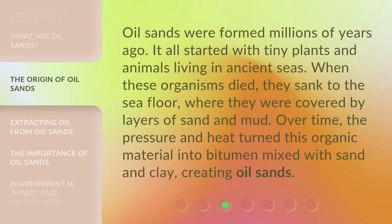Oil sands were formed millions of years ago. It all started with tiny plants and animals living in ancient seas. When these organisms died, they sank to the sea floor, where they were covered by layers of sand and mud. Over time, the pressure and heat turned this organic material into bitumen mixed with sand and clay, creating oil sands.